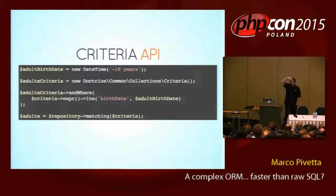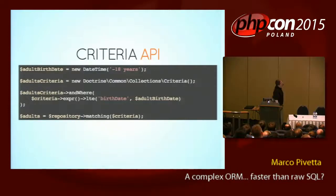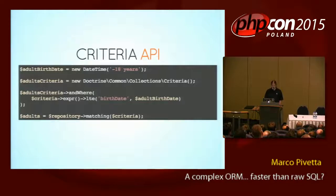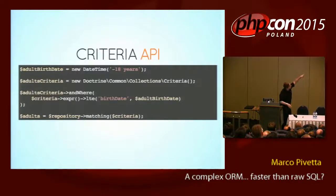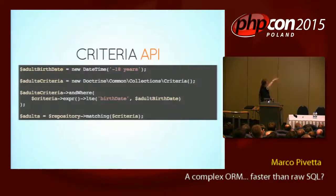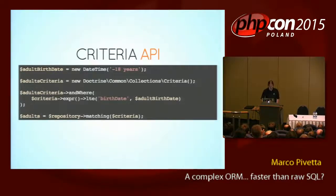To work around that and get a bit deeper into non-object-oriented APIs, we get something like a Criteria API. This is a non-object-oriented API mostly because what we are doing here is we are accessing state inside our objects instead of using their API to filter them. What I have here is a DateTime which is minus 18 years — this is 18 years ago — and then I create a Criteria which is just kind of a filter, and I say criteria where the birthday is smaller than that particular DateTime. That is going to give me all the adults in my record set.